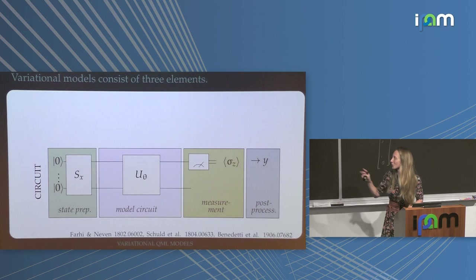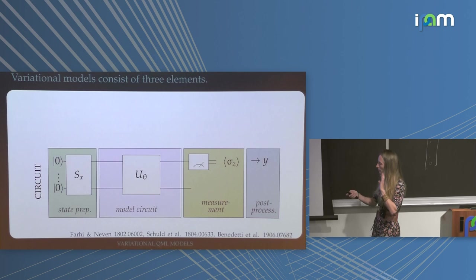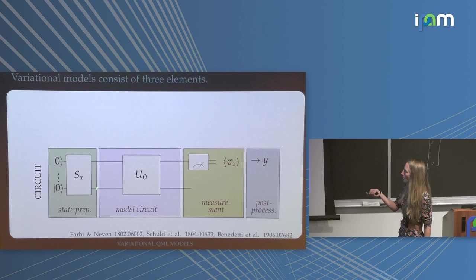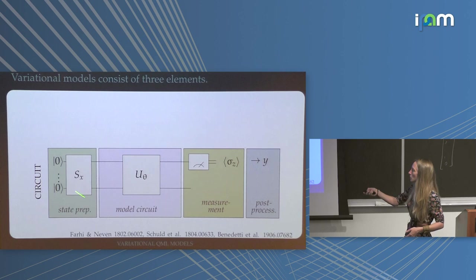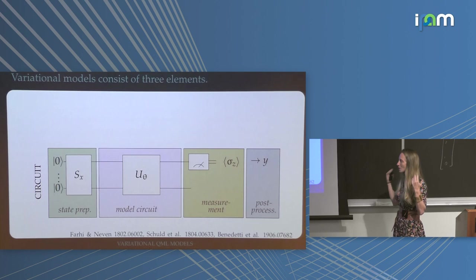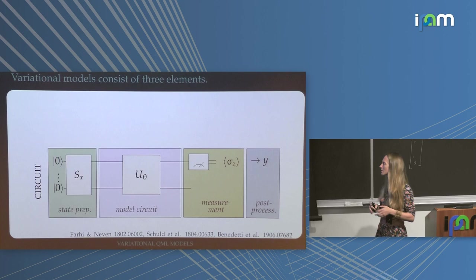To turn this into a model, you need to encode data. The first part of your circuit associates trainable parameters with your features — if you've got single qubit rotations, just put the angle according to your MNIST pixel number 162, for example. Think of it as having a state preparation circuit that encodes data, then a model circuit that does something on the data, then a measurement. These quantum machine learning models — variational classifiers, or variational quantum machine learning models — always have these steps.